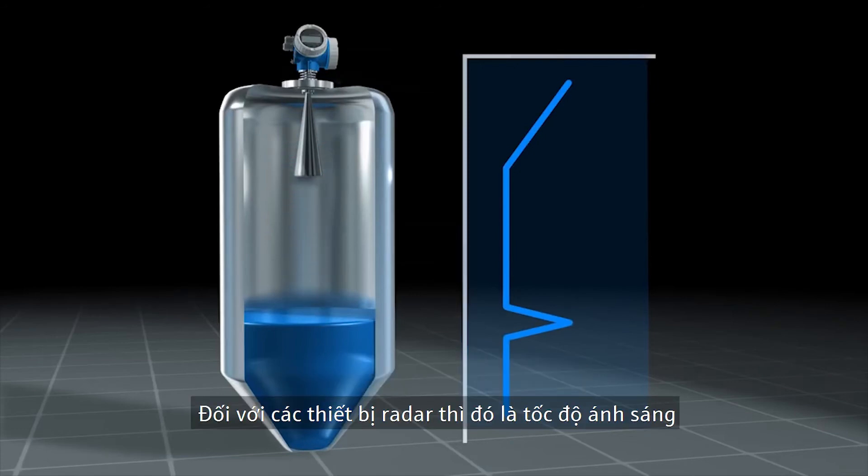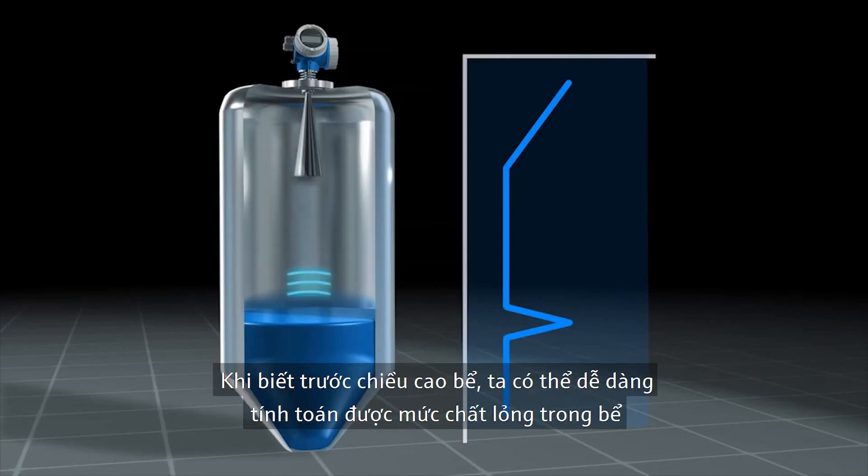In case of radar pulses, it is the speed of light. Taking the height of the tank into consideration, the level can easily be calculated.